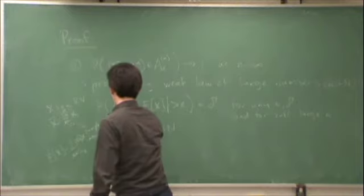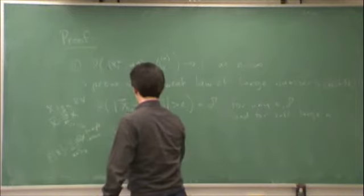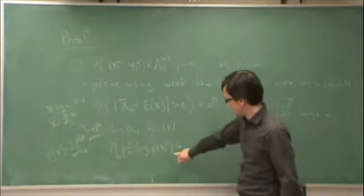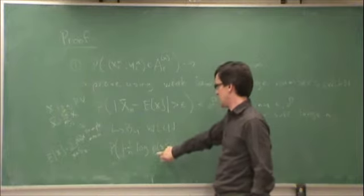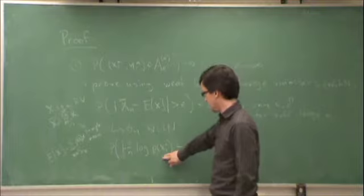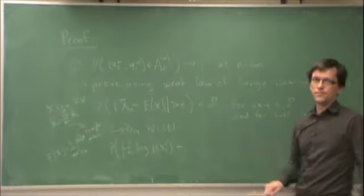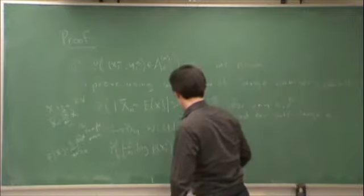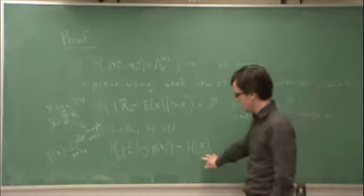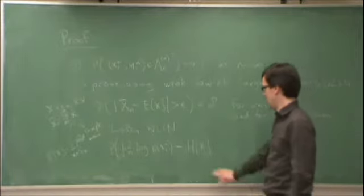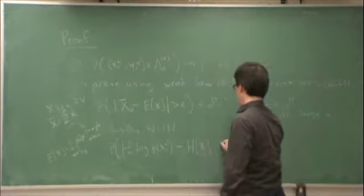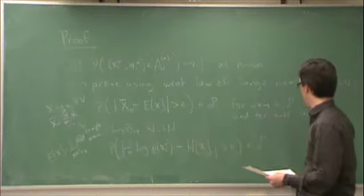By the Weak Law of Large Numbers, the probability of the magnitude of minus one over n times log of P(x_1^n) minus the entropy H(x) is greater than epsilon is less than delta for sufficiently large n. The joint probability P(x_1^n) is a product over i, so the log separates into a sum — this is the sample mean of the random variable log P(x_i). And the entropy H(x) is the expected value of log(1/P(x_i)).